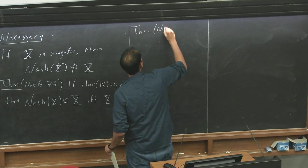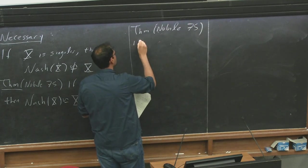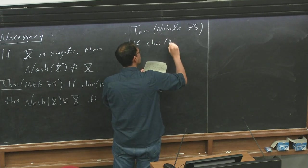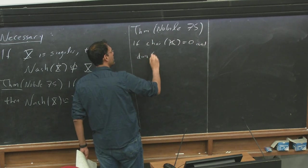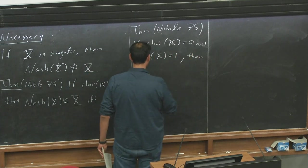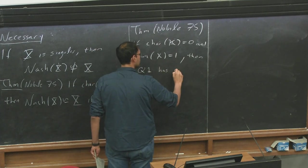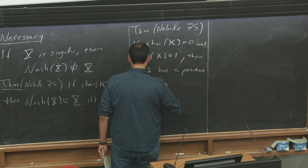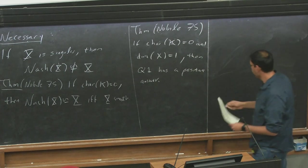He proved in the same paper that if the characteristic of the field is 0, and the dimension of the variety is 1, so it's a curve, then our question, the first question, has a positive answer. So we can resolve the curves using this. And then he also gave an example.